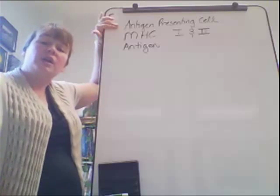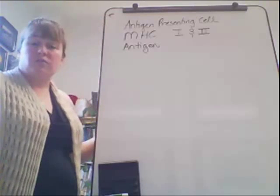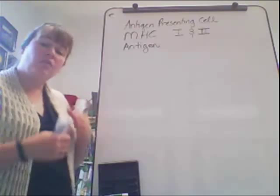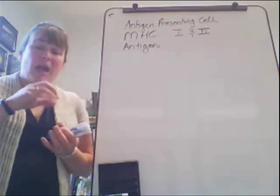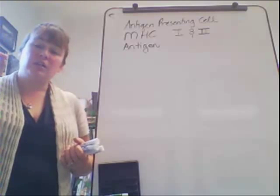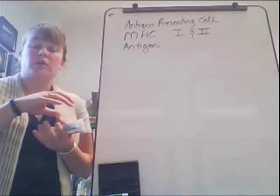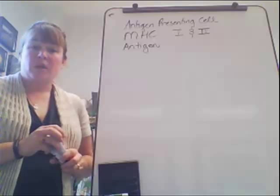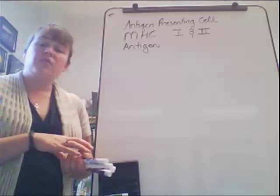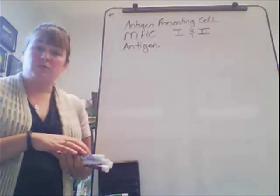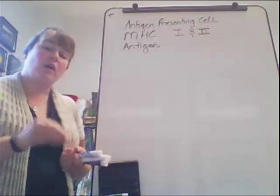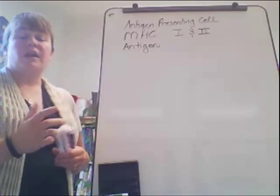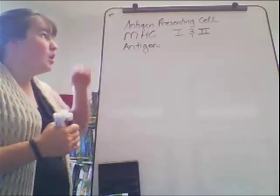Antigen presenting cells include B cells, dendritic cells, macrophages, and reticular cells. These are cells that have the ability to take in a foreign particle, digest it, and then display a piece of the antigen — a piece of that former cell that was destroyed — onto their surface. The antigen presenting cell digests foreign molecules, foreign cells, and foreign particles, then embeds a piece of that particle into its surface so it can signal other cells with a specific type of response.